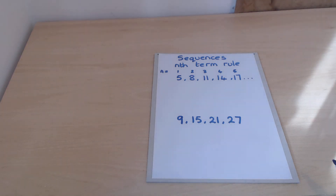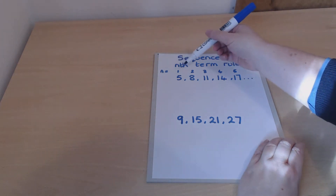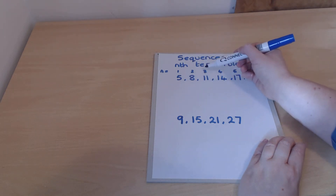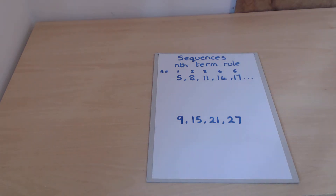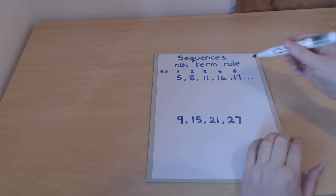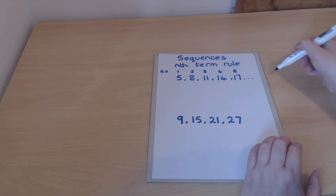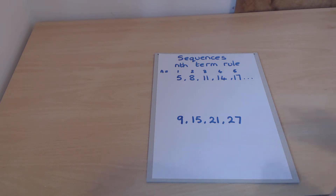Let's look at how to find the nth term rule of a sequence. The n in the nth refers to the position of the numbers in our sequence — so here n is 1, n is 2, n is 3 and so on. We're going to come up with a rule so that we don't have to keep going up term by term. Say I wanted the 23rd term — it would be tedious to keep adding. It would be useful to go straight to that term, and that's what the nth term rule allows us to do.